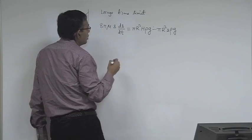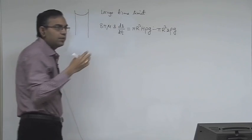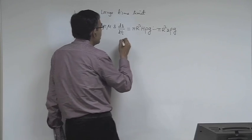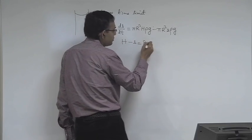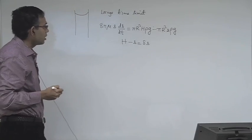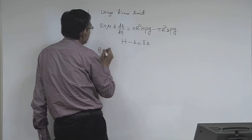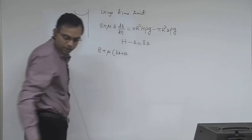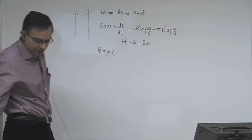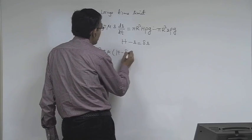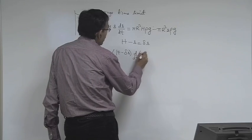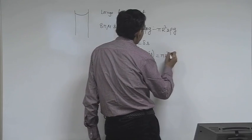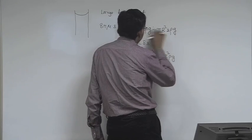The hallmark of the large time limit is that the difference between H and S is very small. So let us define H minus S equal to delta S. Substituting, we write 8πμ times (H minus delta S) times d/dt of (H minus delta S) equals πr²ρg times (H minus delta S).